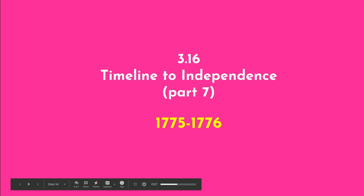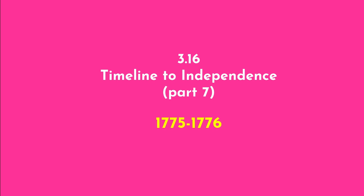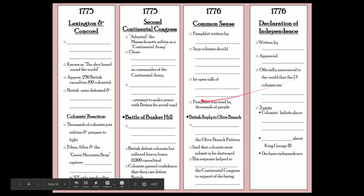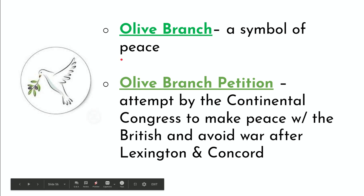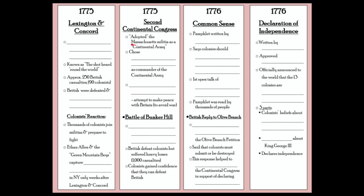Hello again, and welcome to another exciting episode of Social Studies. We are up to assignment 3.16, and in the timeline notes, this is part 7, which means there's probably only one part left. In our timeline notes, we should have already filled in up to the Second Continental Congress, 1775. We did not do the Battle of Bunker Hill there, which might give you a hint of what we're doing today. And today, we are not doing the Declaration of Independence, so this should not take you too long. Please do not fast forward or skip it — just watch, listen, and enjoy.